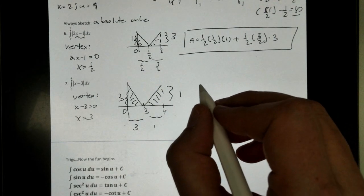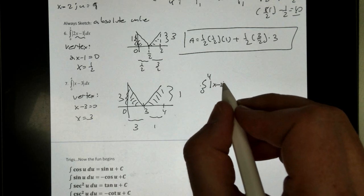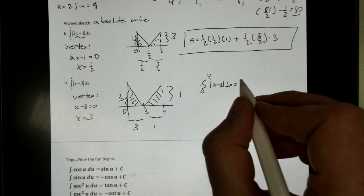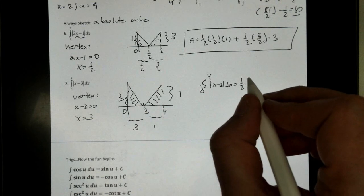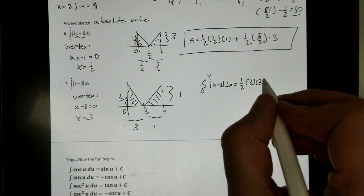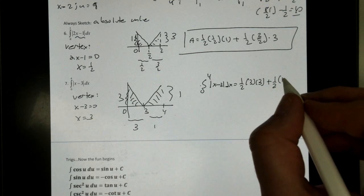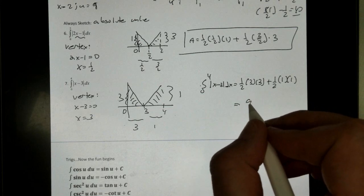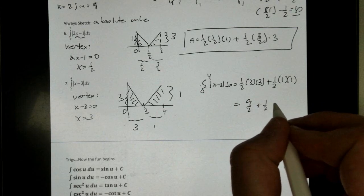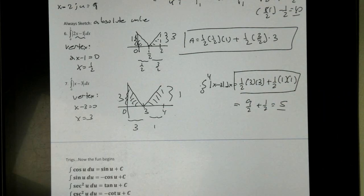So to get our integral, and we should really write it this way, it's just the area. 1 half. The base of the first one is 3. It has a height of 3. The second one is 1 half. The base is 1. And it has a height of 1. And if you want, you can simplify. This is just 9 halves plus 1 half, which is just 5. But you can leave this as is as well. Very easy.